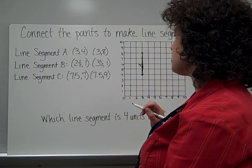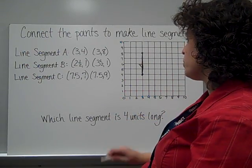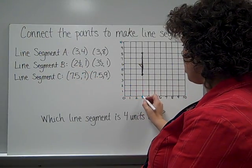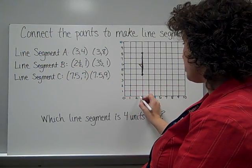All right. Let's look at this one. Line segment B. That one was 2 and 1 half. Okay. Well, here's 2. There's 3. 2 and 1 half would have to be here in the middle.